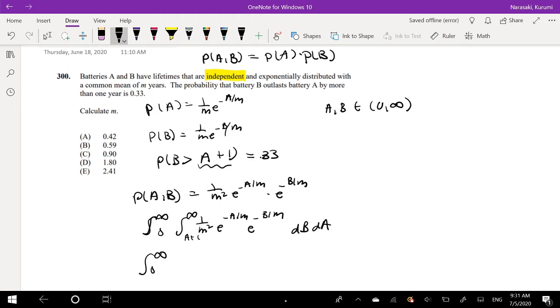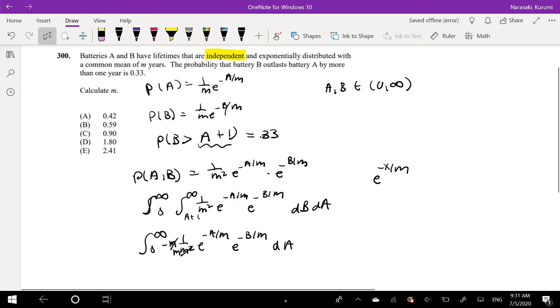So the first part, the second integral stays the same. This part is just a constant because we're integrating with respect to B. So the only thing that gets changed is this one right here. What's the integral of e to the negative B over M? Imagine this B being like X, so it's the same thing as saying negative X over M. So the anti-integral of this would just be negative M.